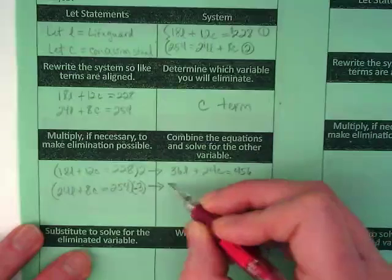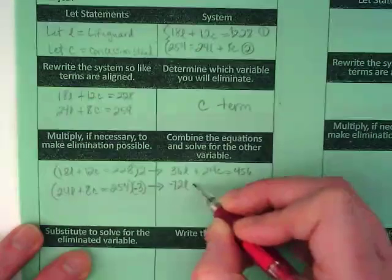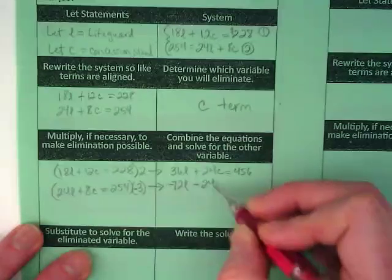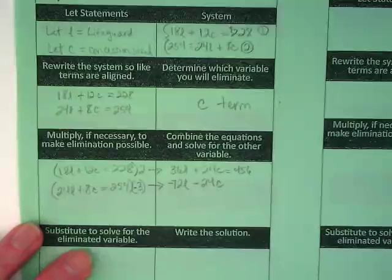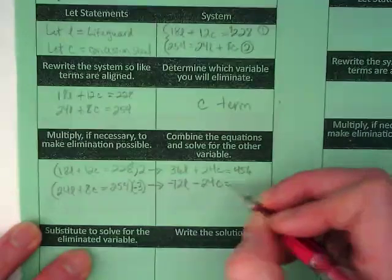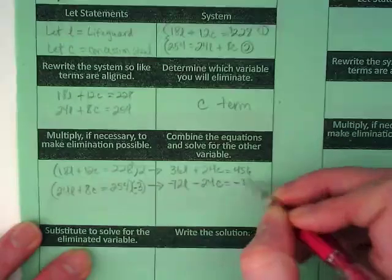When I multiply 24L by negative 3, I end up with negative 72L. 8C times negative 3 is going to give us our negative 24C, which was the goal. And 254 times negative 3 gives us negative 762.